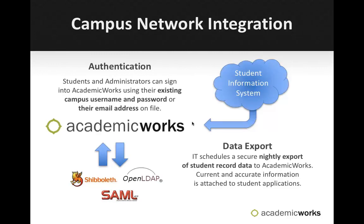The other common integration with Campus Networks would be your data export. This is information that you're gathering from a student information system and sending to Academic Works on a regularly scheduled basis — a nightly export or maybe every other night, whatever schedule you choose. Academic Works at no time ever goes into your student information system to access this information. It is built by a query that your IT team designs, pulls information out of the student information system, and places it in a CSV file. That CSV file is then securely sent to Academic Works, where it's uploaded into the system so that current and accurate information can be attached to all of your student applications.